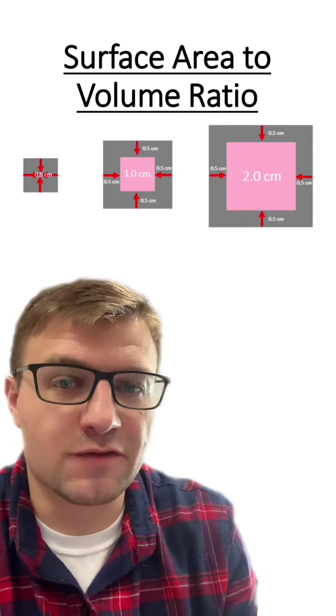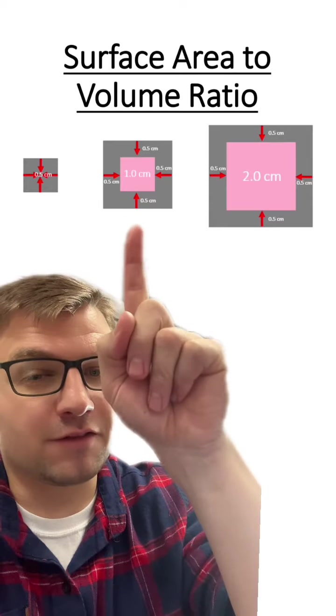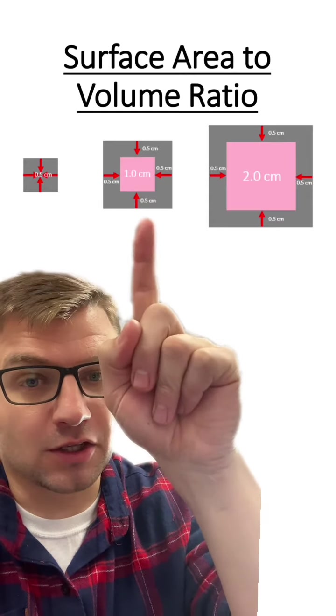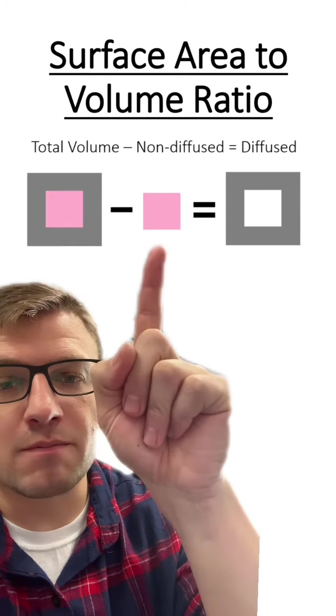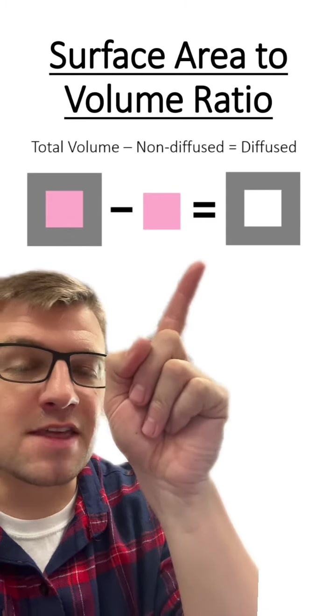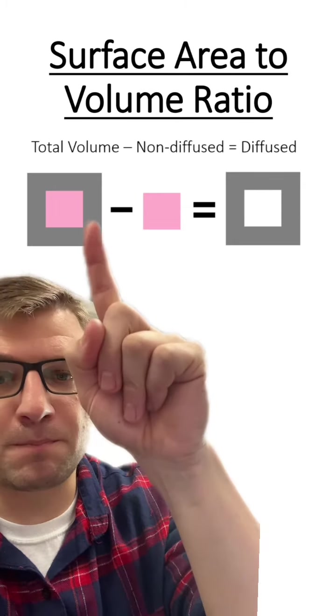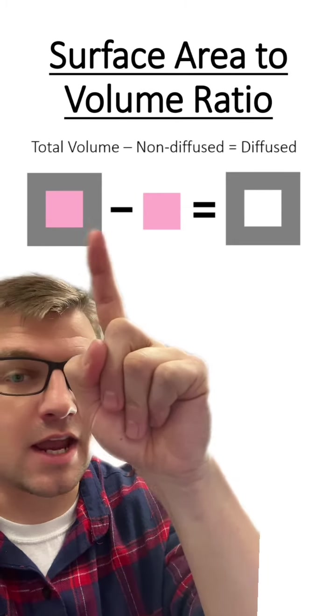So how do we calculate the diffused versus undiffused? To calculate the diffused portion for the 2 centimeter cube, you have to take the total volume minus the non-diffused volume, and then you're going to get the diffused volume. So you're basically calculating this gray area right here.